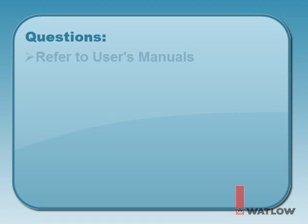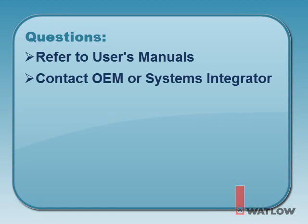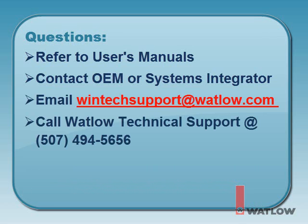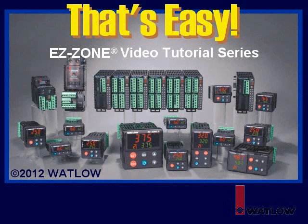Still have questions? Refer to any supplied user's manuals for the equipment and controller. Electronic copies of the EZZone controller manuals are available on Watlow's website. Questions on the equipment should be directed to the original equipment manufacturer or systems integrator, as only they know the equipment and the required controller settings. For questions specific to the controller, email Watlow Technical Support at wintechsupport@watlow.com or call and speak to an application engineer at 507-494-5656 between 7 and 5 p.m. Central Standard Time. Be sure to have the controller's model number. We hope you found this installment of That's Easy helpful, and we'll explore additional topics in other installments.